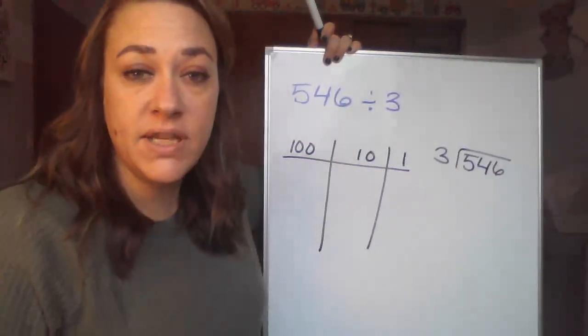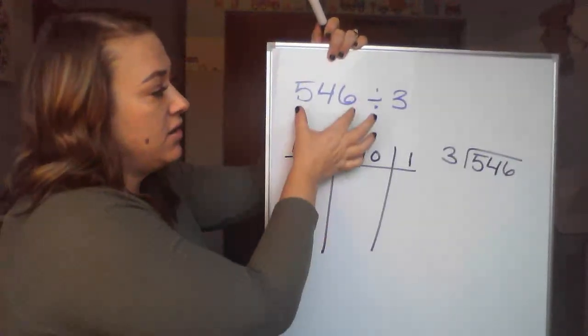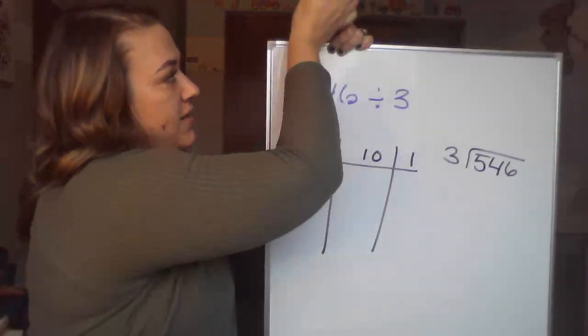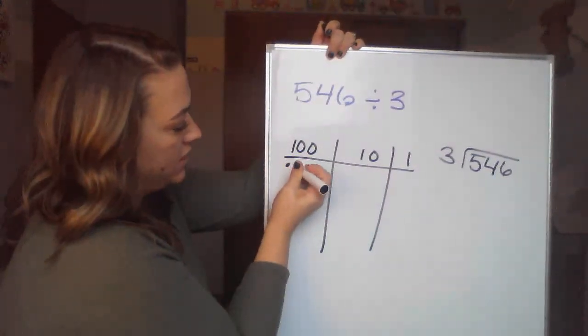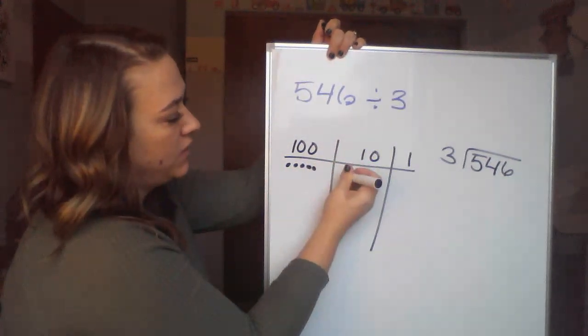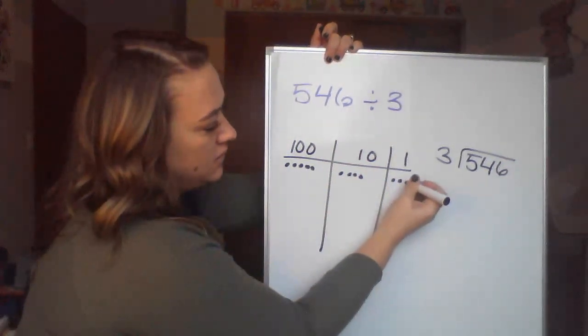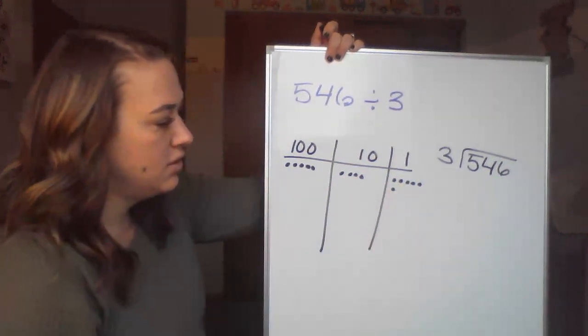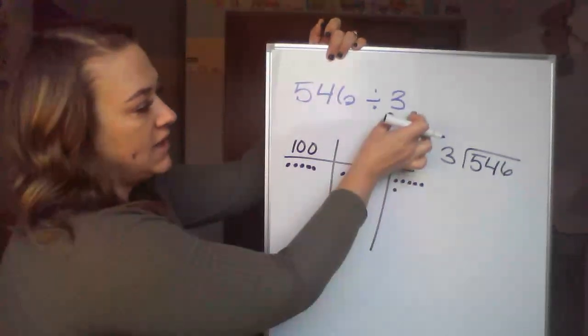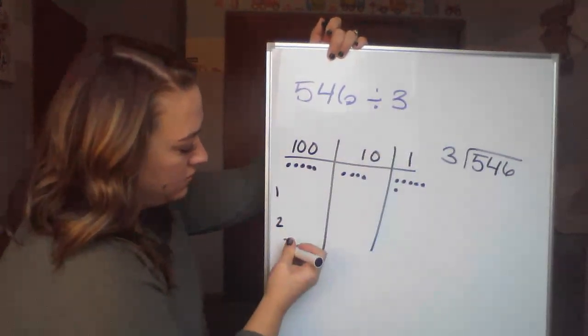All right, so there's the last one for today. 546 divided by 3. So we're taking our dividend. We're going to represent that first. So I have 5 hundreds, I have 4 tens, and I have 6 ones. And we're dividing that by 3.